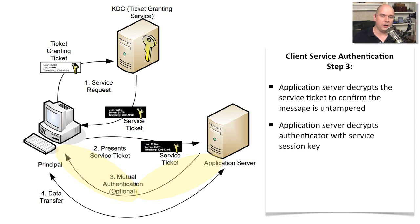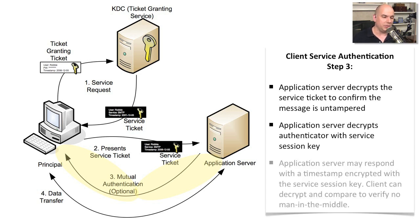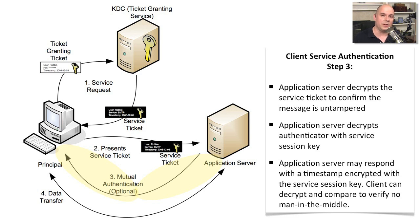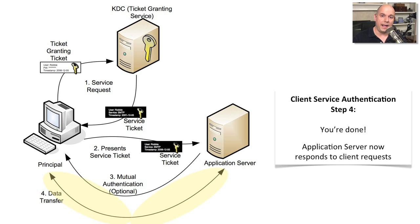The application server decrypts the authenticator with the service session key, and you may even get another response back from the server with one final check to make sure there's no man in the middle. That is an optional step — it's not done all the time, but in very secure environments it may be required to be assured there's no man in the middle. And at that point, you've got access.